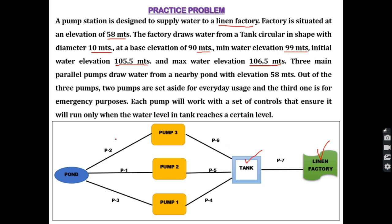To supply water to this linen factory, three main parallel pumps have been provided — Pump 1, 2, and 3 — which draw water from a nearby pond. Water is collected from the pond and distributed to the linen factory through these pumps, then stored in the tank. Out of the three pumps, two are set aside for everyday usage and the third is for emergency purposes.